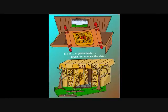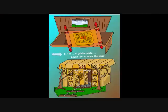Once in the treehouse, they found a scroll, and on the scroll was a map, and the symbol of a golden plate with an eight in the middle. They followed the map and found a hidden door at sixty-four. Pressing the eight, it opened. Eight times eight, a golden plate, equals sixty-four to open the door.